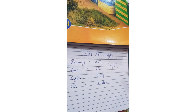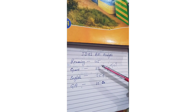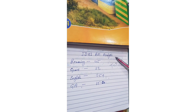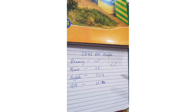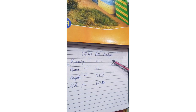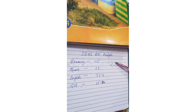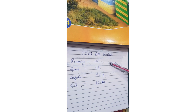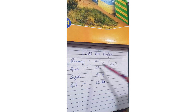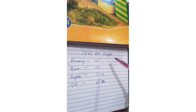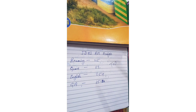The first section was reasoning and data interpretation. Five questions were from Quantity 1 and Quantity 2 types, one question was from machine input, five to six questions were from symbolism, and three to four questions were from critical reasoning. The puzzle was also moderate, and the data interpretation was lengthy and time-taking. I attempted 45 questions in the reasoning section overall, which was moderate to difficult.